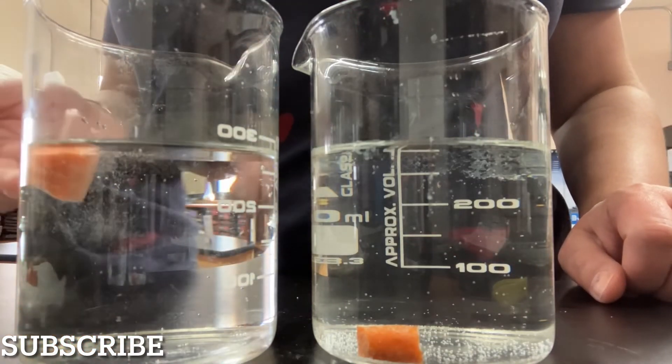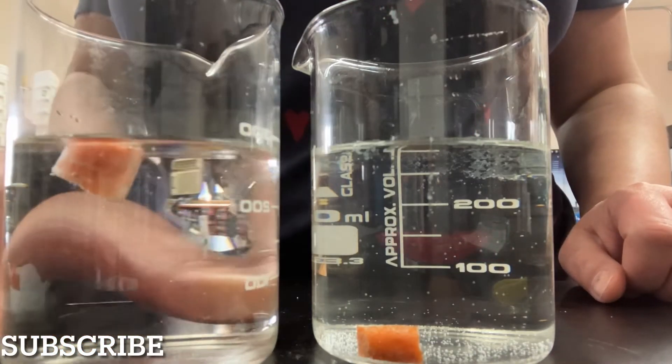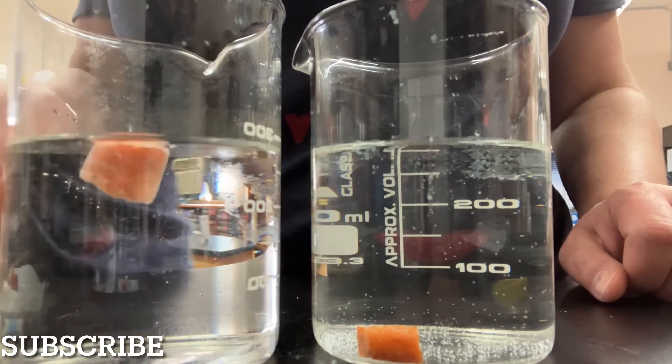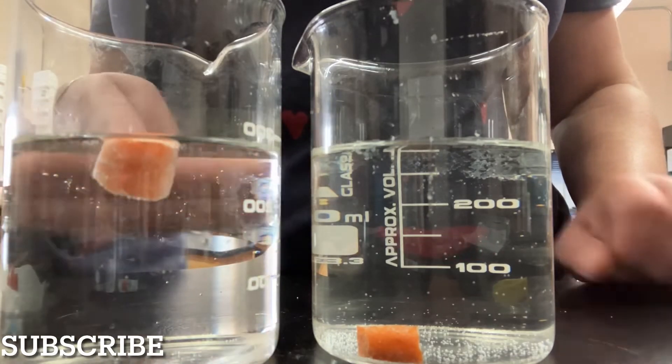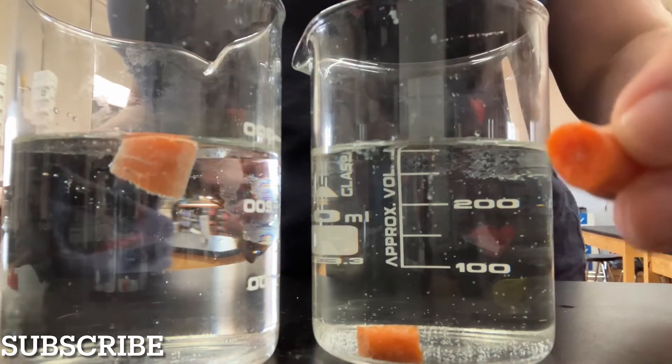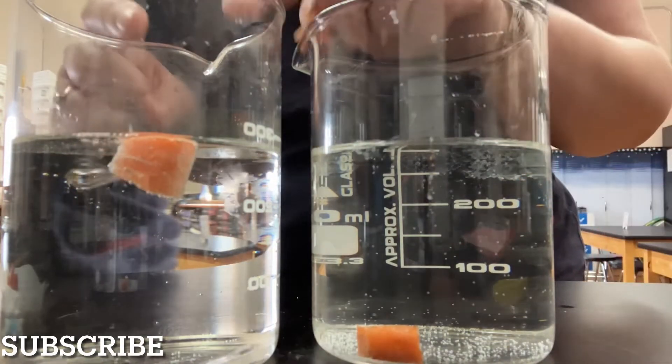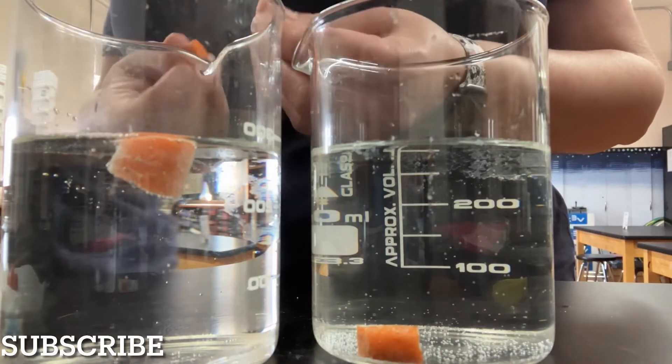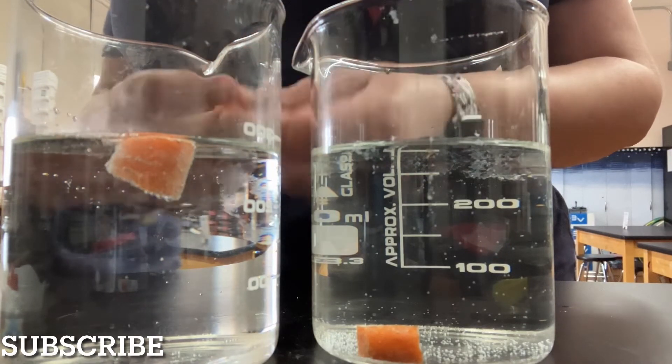Look at that. It's starting to float. Notice all of these little bubbles. The carrots reacting to the hydrogen peroxide is causing all those bubbles to form around the carrot